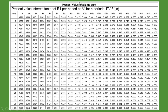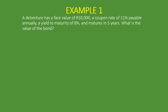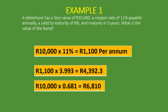On the lump sum table — where all factors start with zeros — we go to year five and the 8% column. The factor there is 0.681. We multiply the face value of R10,000 by 0.681, which gives us a present value of R6,810. To find the market value of the debenture, we simply add the present value of the interest payments and the present value of the maturity value together.